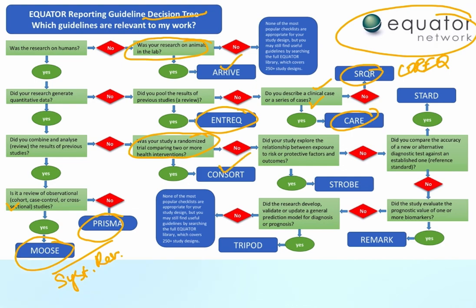If we are doing a randomized controlled trial with two or more health interventions, then we need to use the CONSORT guidelines. If we are doing observational studies such as case-control study, cohort study, or cross-sectional study, then we need to use the STROBE guidelines.